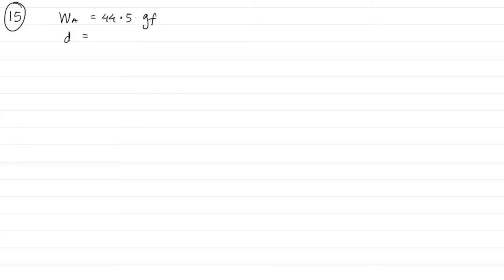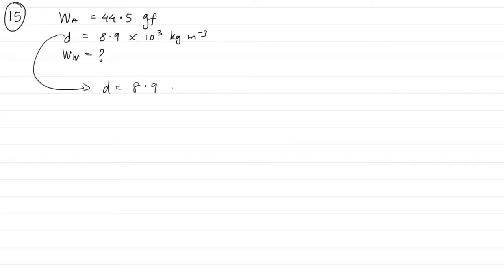A piece of iron weighs 44.5 gram force in air, and the density of iron is 8.9 × 10³ kg per meter cube. We need to find the weight of the iron piece when immersed in water. Since the density is 8.9 × 10³ kg/m³, that is 8.9 gram per centimeter cube, so the relative density is just 8.9.